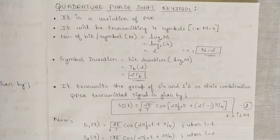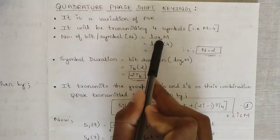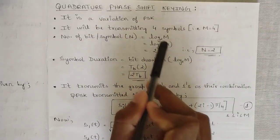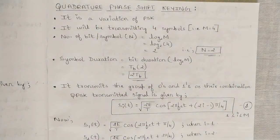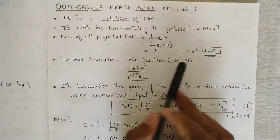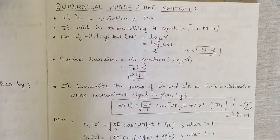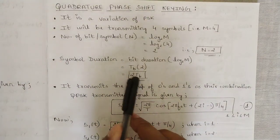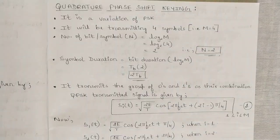The value of M is four. The number of bits per symbol, n, equals log base 2 of M, which gives log base 2 of 4 equals 2. So n = 2. The symbol duration Ts equals log M base 2 times Tb, which is 2×Tb, where Tb is the time period required for a single bit to travel. These are the key parameters you need to know before getting started with QPSK transmission.